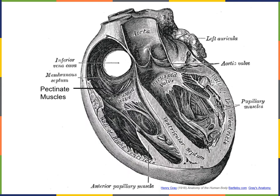Here we see a view of the internal anatomy of the heart from an illustration from Gray's Anatomy. We can see there are muscular ridges on the inner surface of the heart. Within the atria, these muscular ridges are called pectinate muscles. There are pectinate muscles in the walls of both the right atrium and the left atrium.